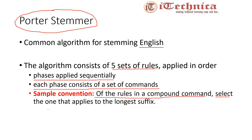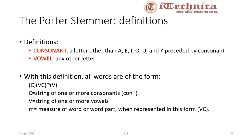Before starting the algorithmic part, we need to understand the conventions and definitions. The Porter Stemmer defines two terms: consonant and vowel. In English, letters other than a, e, i, o, u, and the letter y when preceded by a consonant, are considered consonants. A vowel is any other letter — that is, a, e, i, o, and u.